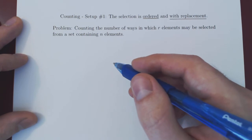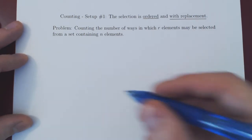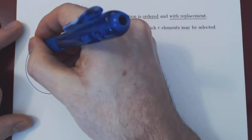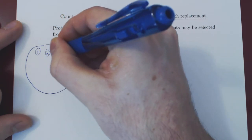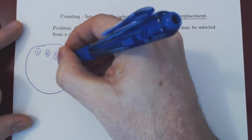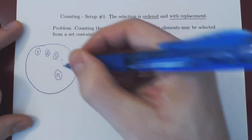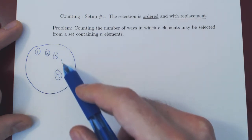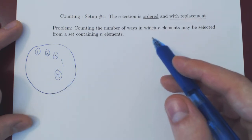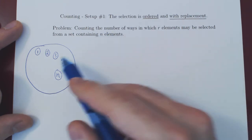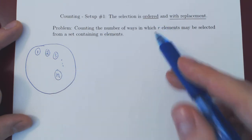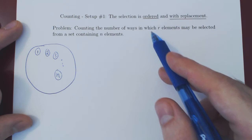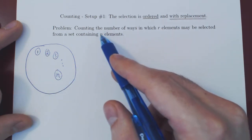You can imagine your elements simply being balls numbered from 1 to n. So imagine that you have your set of balls: ball number 1, ball number 2, ball number 3, up to ball number n. Think of your n objects, your n elements, in the simplest way as balls numbered from 1 to n. Out of those n balls, we want to select r at random, and we want to count the total number of ways in which r balls can be selected from n balls.